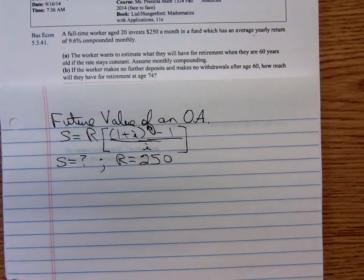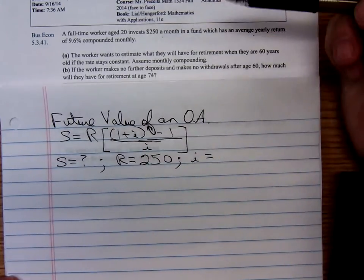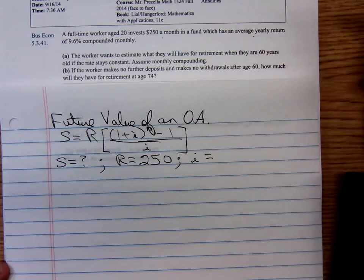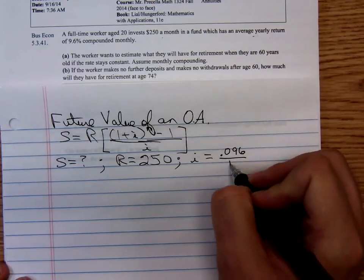i isn't just that 9.6 percent. They're not adding 9.6% interest every month. You take the 9.6% interest written as a decimal and you're splitting it up over the number of months in a year.